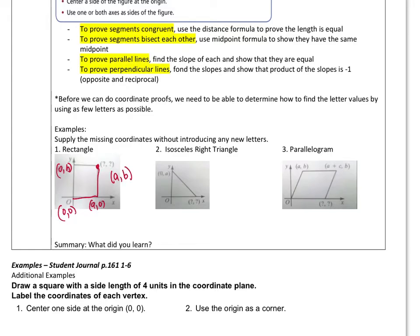Over here, it's an isosceles right triangle. So that means that's a right angle, and these two are congruent. So if this has a distance of A, right, because it's at 0, A, well, then this will have a distance of A, so it'll be at A, 0.